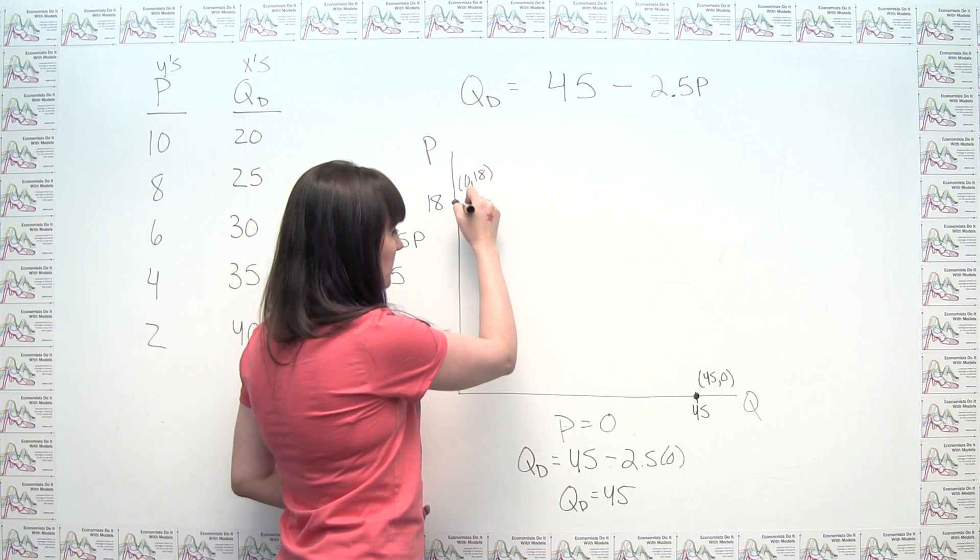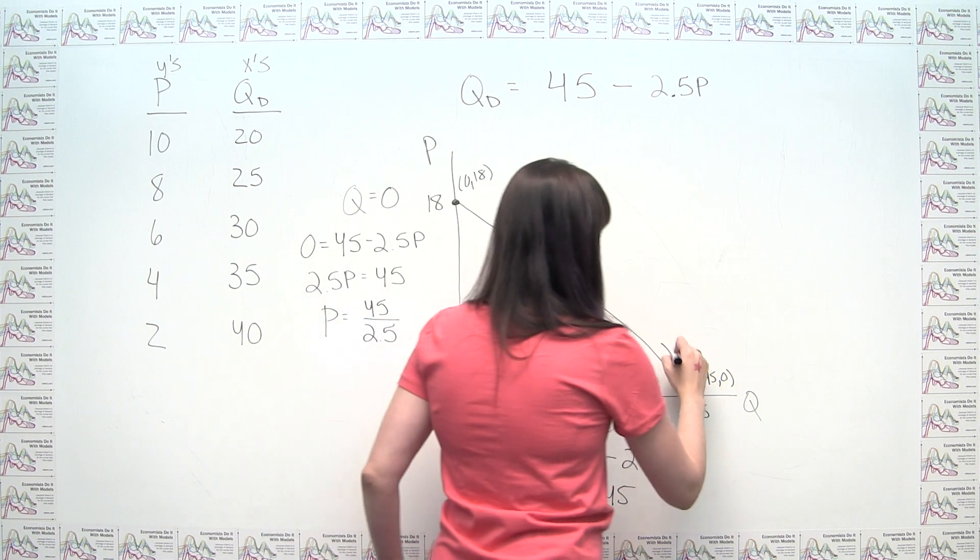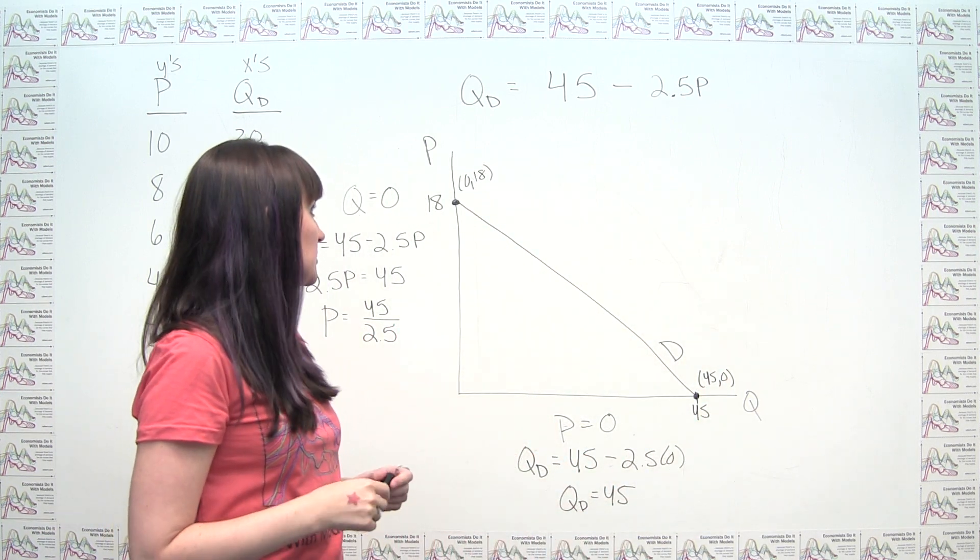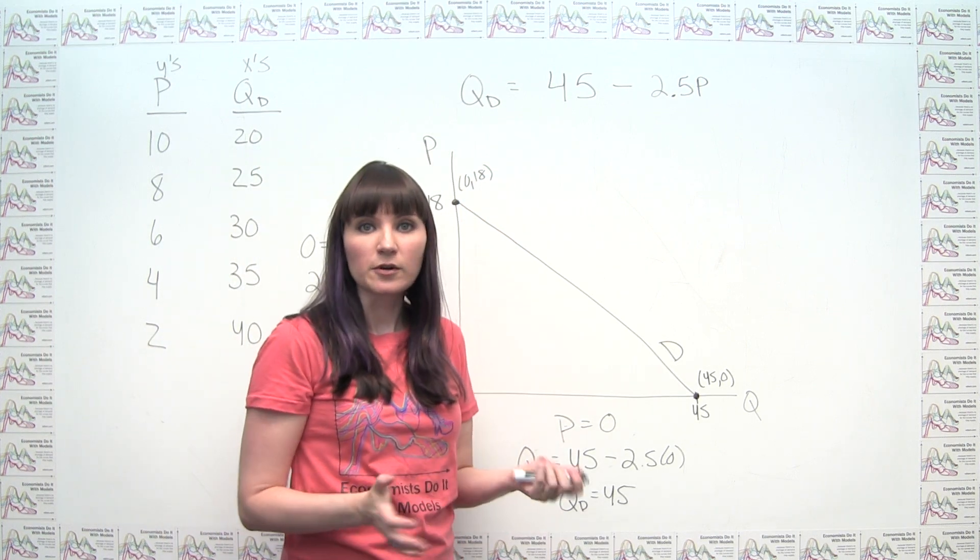And then we can connect the dots like so. And again, label this as D for demand. And you'll notice we could do all of this without actually turning this around, without actually plotting a whole bunch of different points, and so on and so forth.